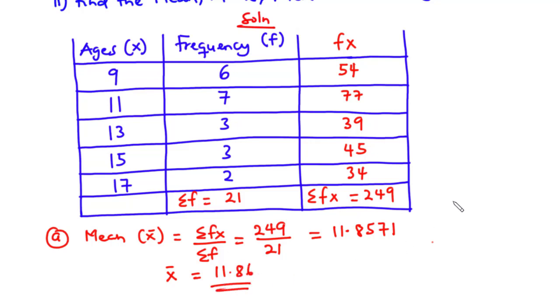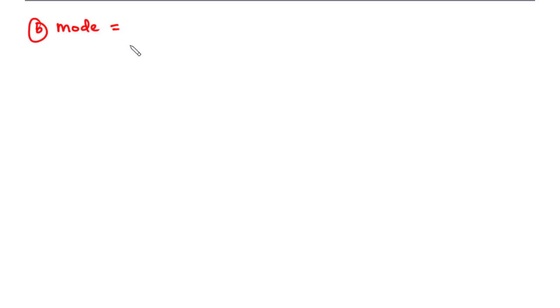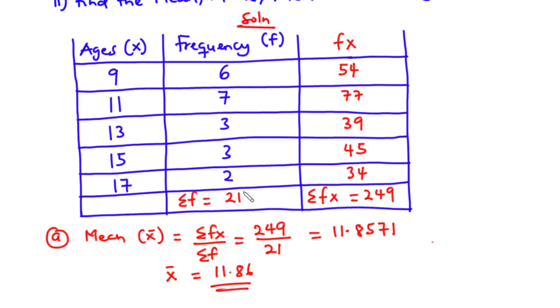Now let's find the mode. The mode is the age that appeared most frequently. Back to our table, you realize that 11 appeared most frequently because we have 7 occurrences. So since 11 appeared the most number of times, the mode is 11.